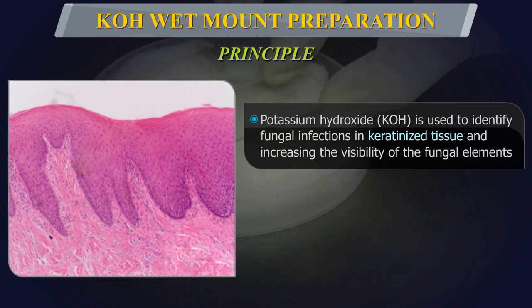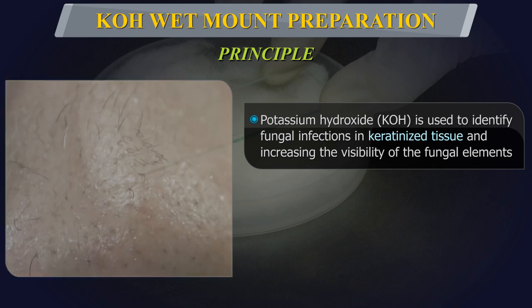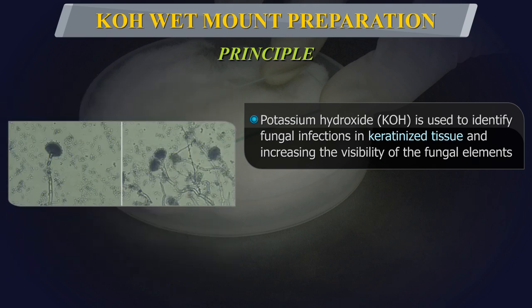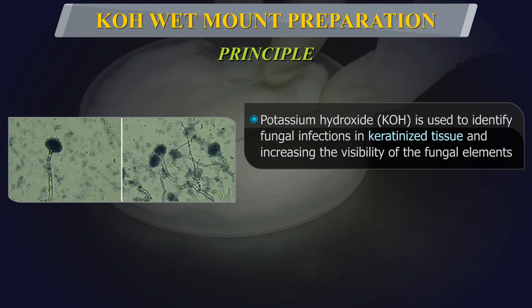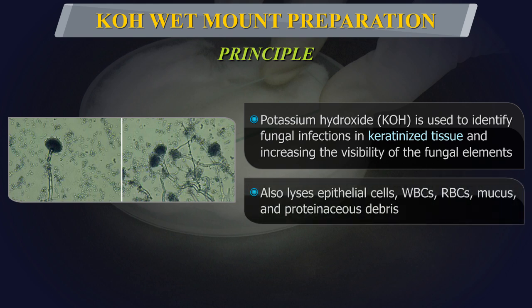Principle: Potassium Hydroxide is used to identify fungal infections in keratinized tissue like skin, hair and nails. It acts by digesting the keratin, thereby increasing the visibility of the fungal elements if present. It also lyses epithelial cells, white blood cells, red blood cells, mucus and various other proteinaceous debris.